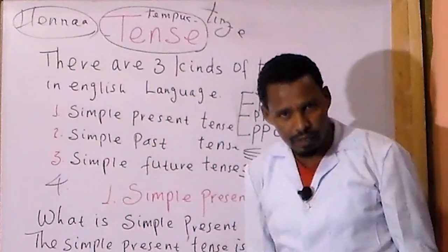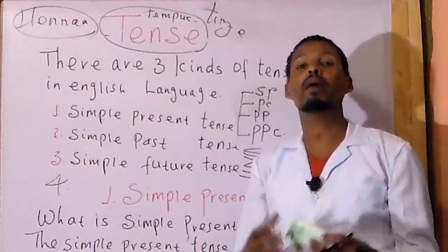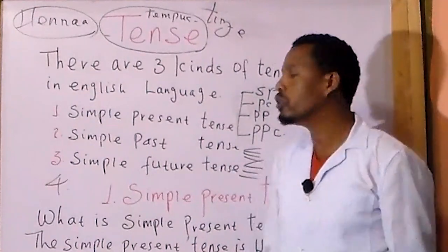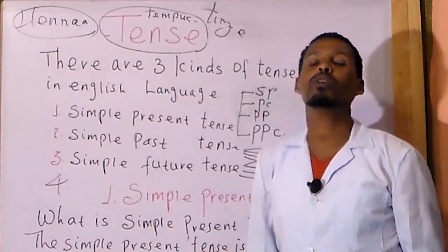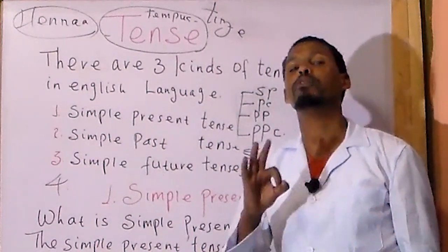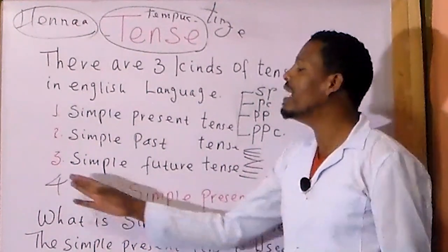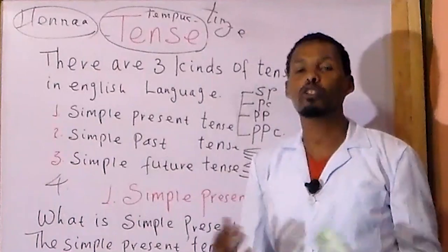For conditional tenses, there is zero conditional, conditional type 1, conditional type 2, and conditional type 3.